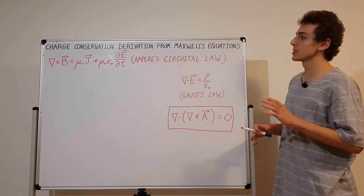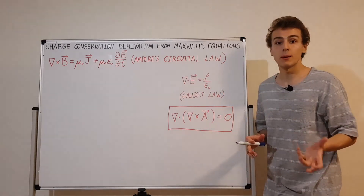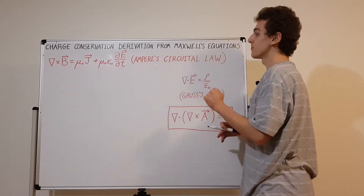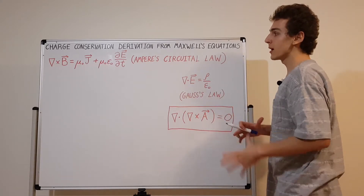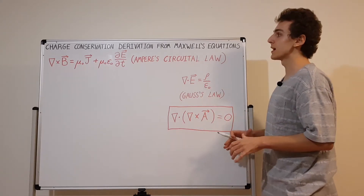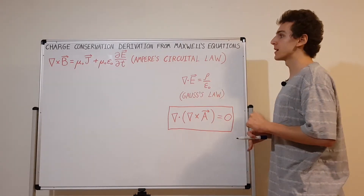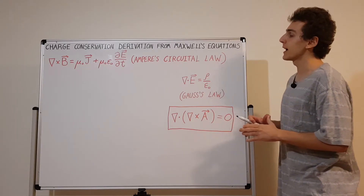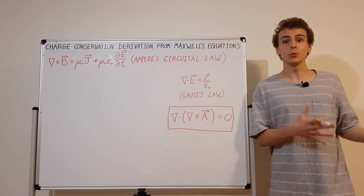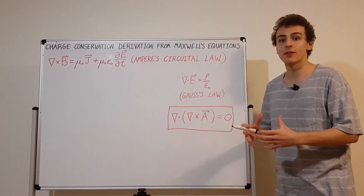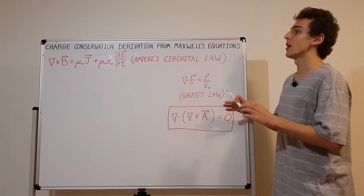We're going to take two of Maxwell's equations: Ampere's circuital law with Maxwell's modification and the displacement current term, and Gauss's law for electric fields. We'll combine them together and use a vector identity to derive charge conservation. After the derivation, we'll look at the relationship of electromagnetism to fluids, because charge can sometimes behave like a fluid flowing.